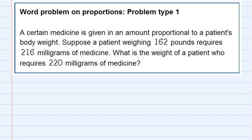Word problem on proportions, problem type 1. We're told that a certain medicine is given in an amount proportional to a patient's body weight. Suppose a patient weighing 162 pounds requires 216 milligrams of medicine. So those go together: 162 pounds and 216 milligrams.